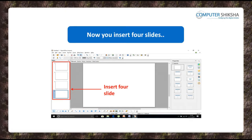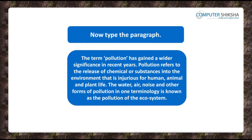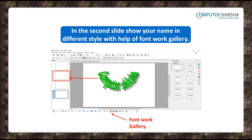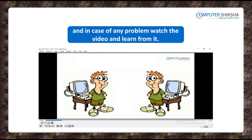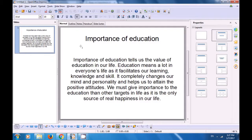Next all of you insert four slides and in the first slide type out the paragraph being shown to you. In the second slide use the FontWork gallery to show your name in a style of your choice. If you face a problem watch the video and learn from it. With the help of this video we are now going to once again practice the use of FontWork gallery to write our name or any other word and format it also. So in this we have the first slide where a paragraph is written.